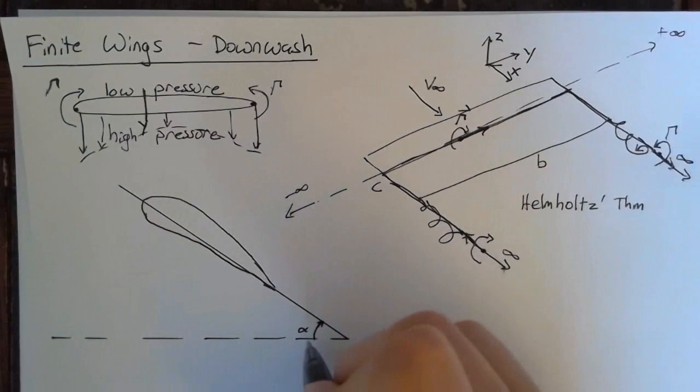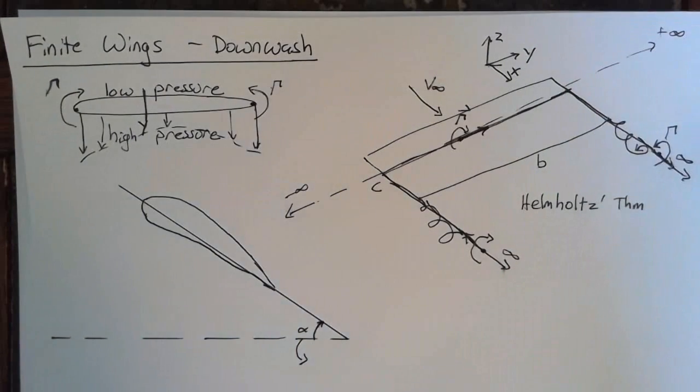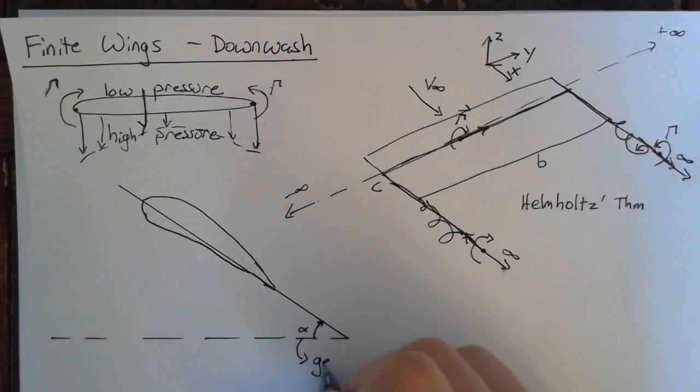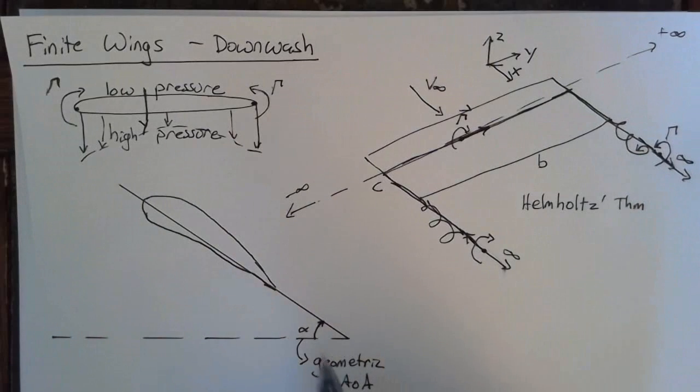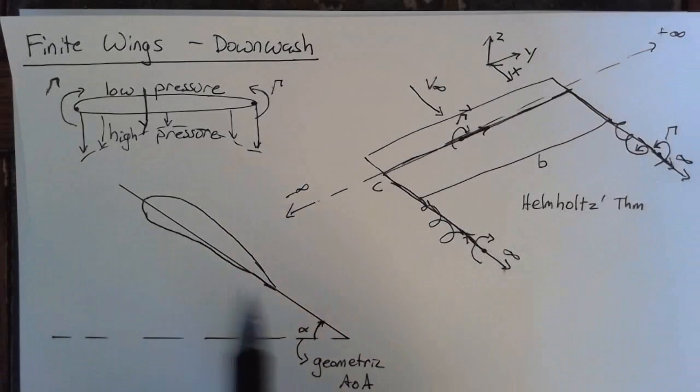And the incoming flow is assumed to be aligned with the x-axis. So this is our alpha, but more than that, we'll give it a name. We're going to call this the geometric angle of attack. And essentially, all that's saying is that this is the angle of attack that, in space, this is forming.